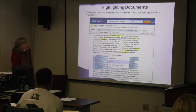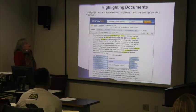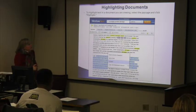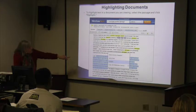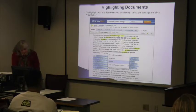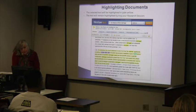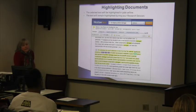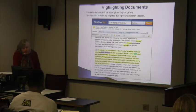To highlight text in a document you are viewing, select the passage and move your cursor over it — a box pops open — then click 'Highlight.' The selected text will be highlighted in pale yellow and will remain highlighted during your particular research session.